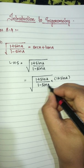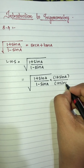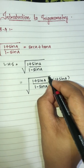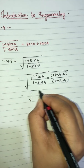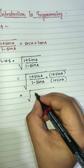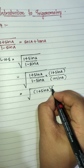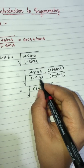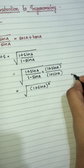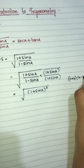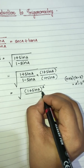This gives us the root of (1 plus sin A) into (1 plus sin A) — the whole square — divided by (1 minus sin A) into (1 plus sin A). The denominator is of the form (a plus b) into (a minus b), which equals a squared minus b squared.